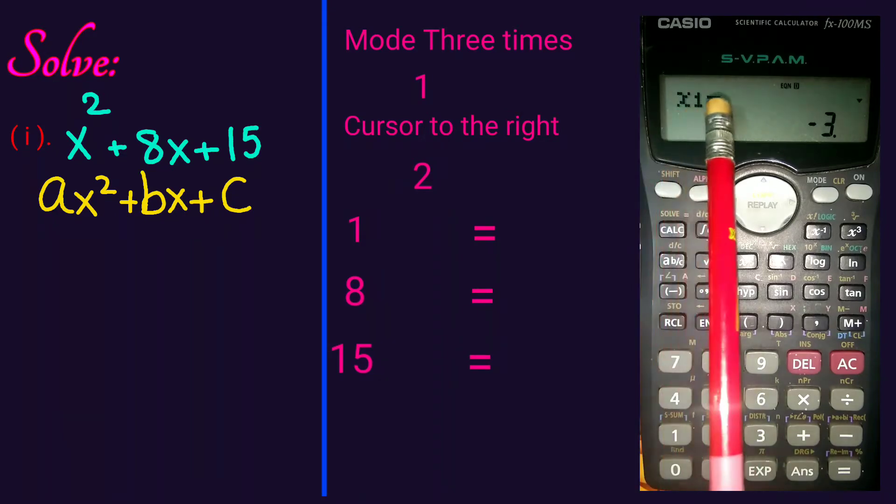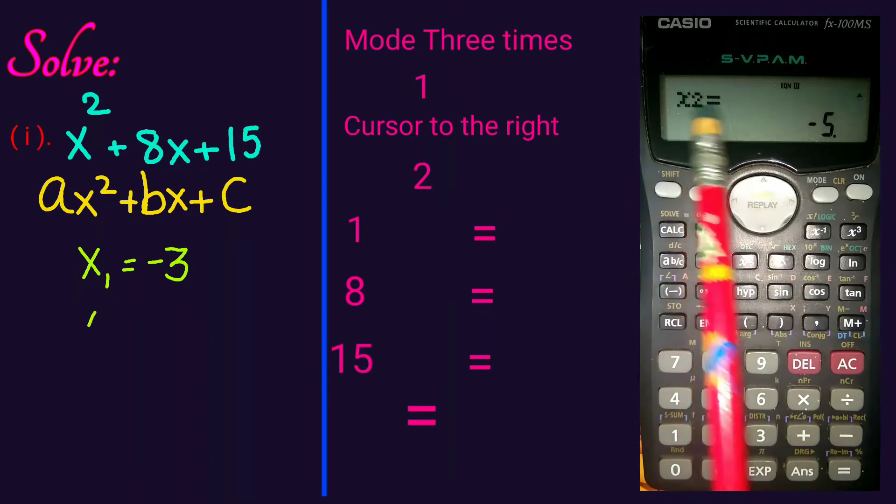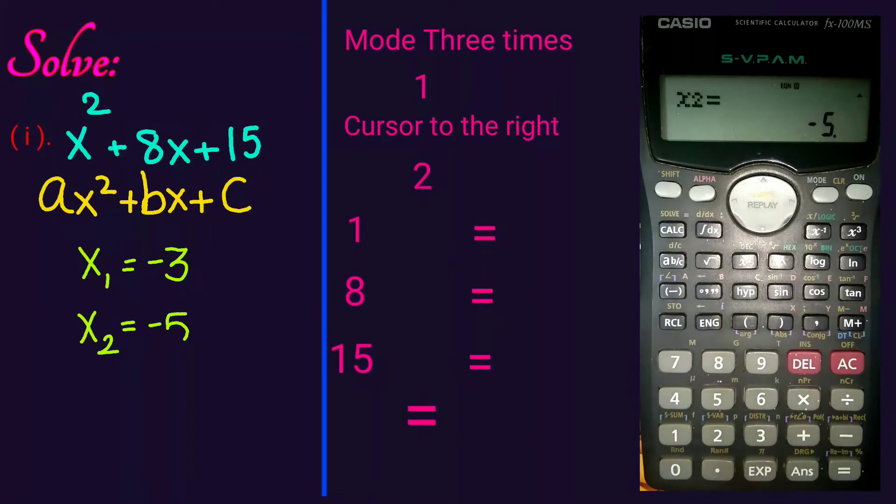We have the value x1 as negative 3. Press equal key again. x2 equal to negative 5.